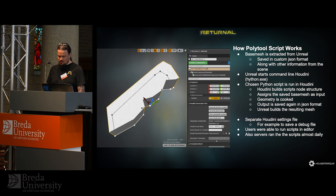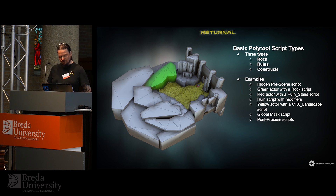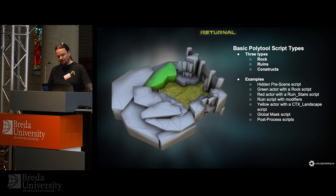Users were able to run the scripts locally in the editor, and we also had server machines crunching the scripts almost daily. We have three basic script types: rocks, ruins, and constructs. We'll go through examples: a hidden pre-scene script, a green actor with the rock script, a tiny red actor with the ruined stair script, ruins with modifiers, a yellow actor with the context landscape script, and finally the global mask and basic post-process scripts.